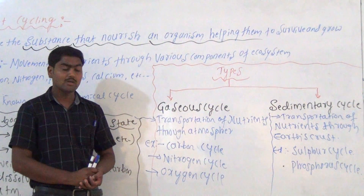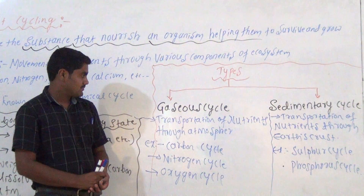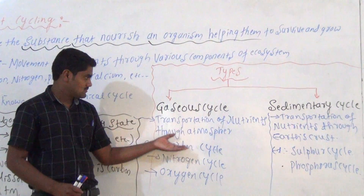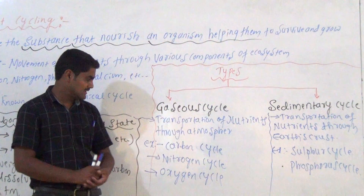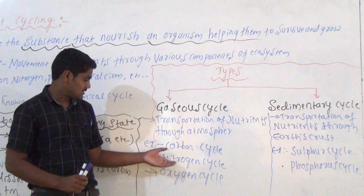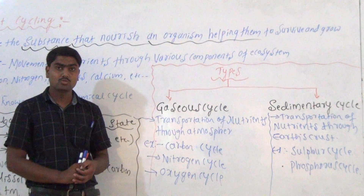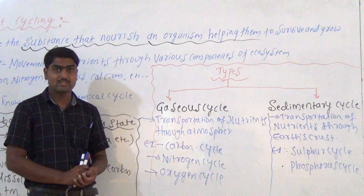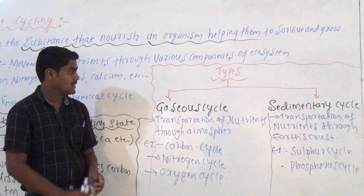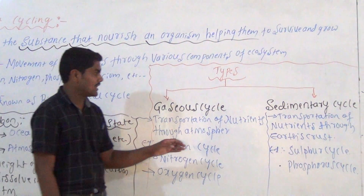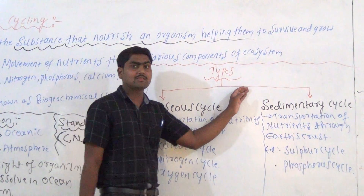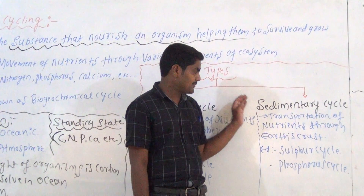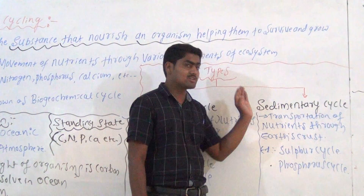Examples of the gaseous cycle include the carbon cycle, nitrogen cycle, and oxygen cycle.